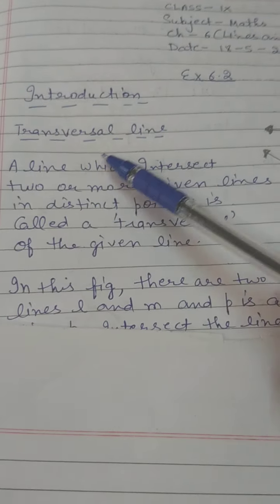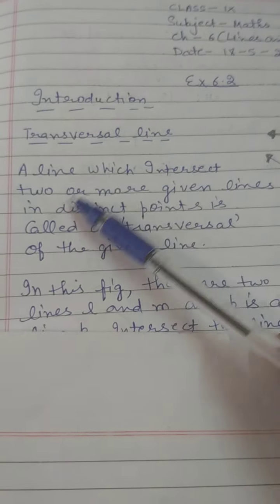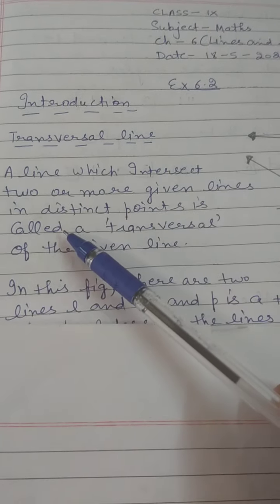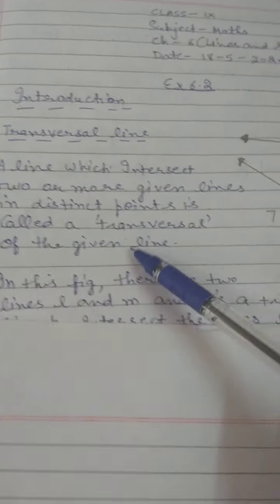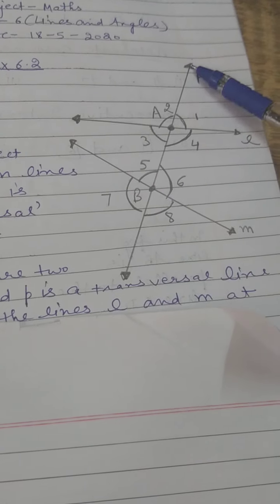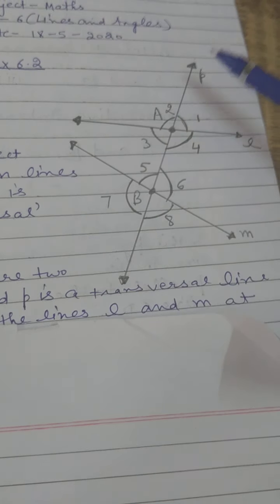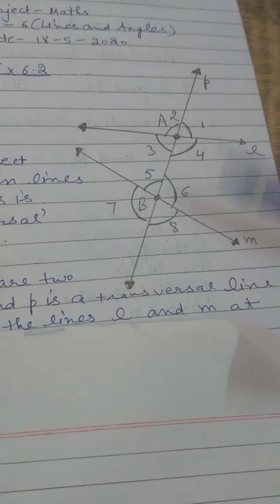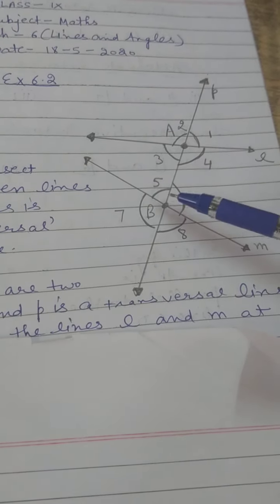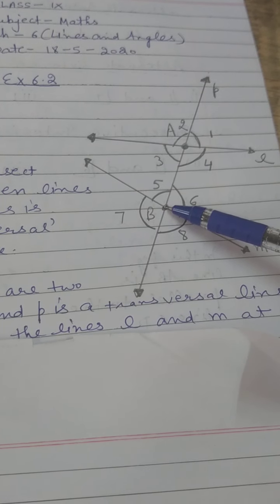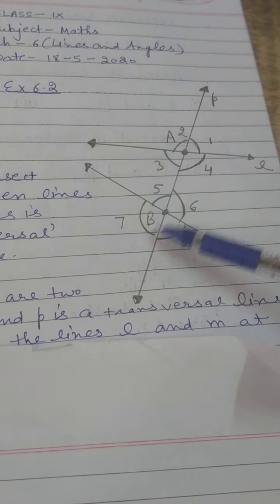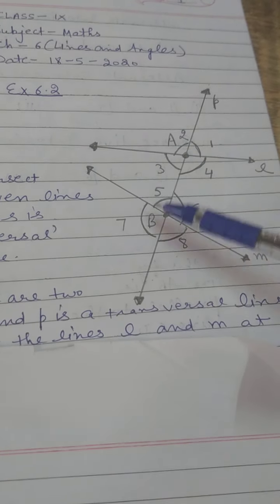I want to discuss the introduction of transversal line. A line which intersects two or more given lines in distinct points is called a transversal of the given lines. In this diagram, there are two lines L and M, and P is a transversal line because line P intersects L and M at two points A and B. Line P is called a transversal line because it intersects L and M at points A and B.